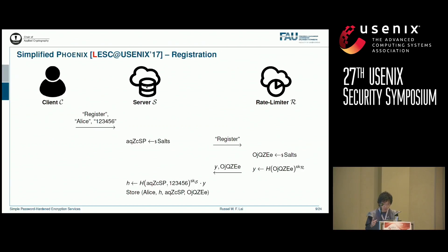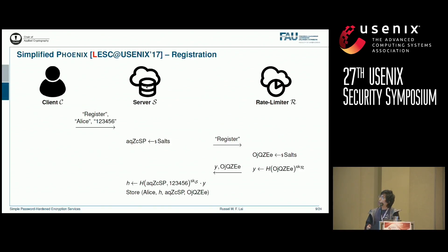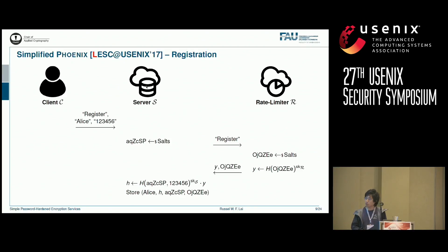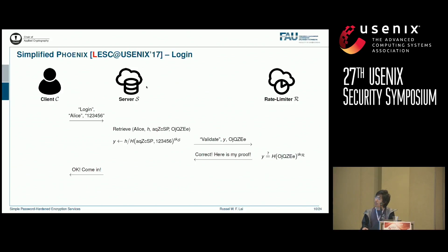With this in mind, here is the simplified Phoenix scheme. To register, Alice still provides her username and password. In the back end, the server samples a salt and informs the rate limiter that someone wants to register. The rate limiter computes a PRF on a random salt and returns this PRF value to the server. The server computes another PRF on its own salt and the password, multiplies it with the rate limiter's PRF value, and stores this product as the hash. To log in, the client provides only the username and password. The server removes its own PRF value from the product and sends the other half to the rate limiter.